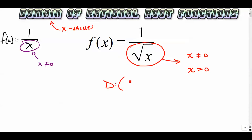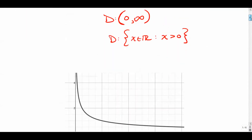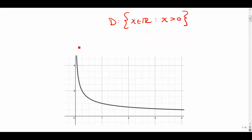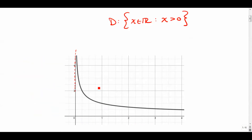You would say the domain is — it can't be zero, so we leave the parenthesis open — but it can be everything positive. In set builder notation, you would say all the x's that are an element of the real numbers such that x is greater than zero. It can't be zero, and it certainly can't be negative. The graph of that shows a vertical asymptote at x equals zero, and the function resides in quadrant one.